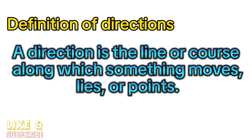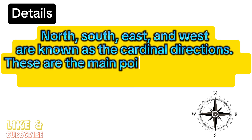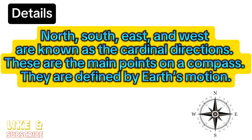A direction is the line or course along which something moves, lies, or points. This is the definition of direction. North, south, east, and west are known as the cardinal directions. These are the main points on the compass.